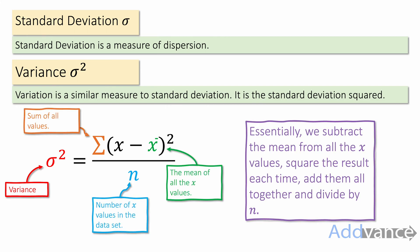In the formula, n is the number of values in the data set. x̄ — that little x with a bar across it — is the mean of the x values, and the sum means sum over all (x minus the mean) squared. So essentially what we do is subtract the mean from all the x values, square that for every x value, add them all together, then divide by n, and we have the variance.